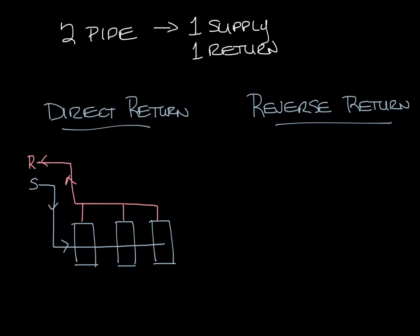So now what you can see, let's label these 1, 2, 3. So what you see is that in this first unit it has the shortest supply path and the shortest return path. And in the last unit you've got the longest supply path and the longest return path.